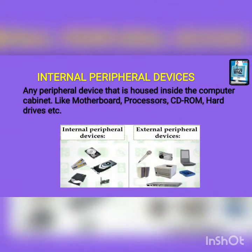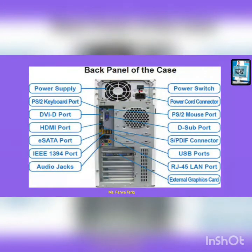Let's have a look at internal peripheral devices. Any device that is built in or housed inside the computer cabinet, like motherboard, processor, CD-ROM, hard drives, etc. In front of you is the back panel of the case. This is the back side of the CPU that you normally have at your home or workplace. There are a few ports with which you can connect the external or internal peripheral devices.